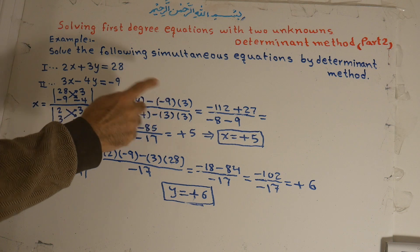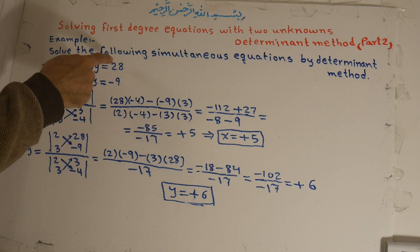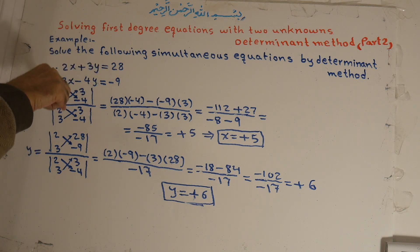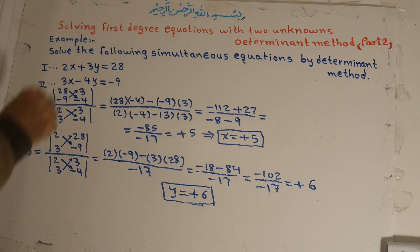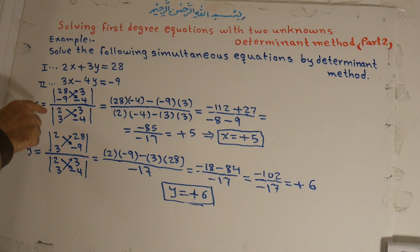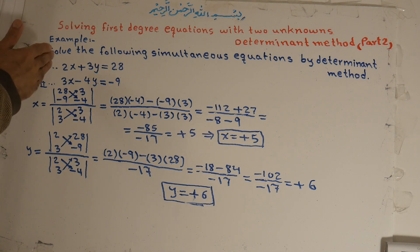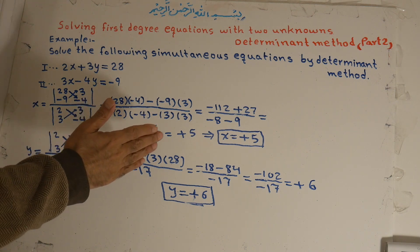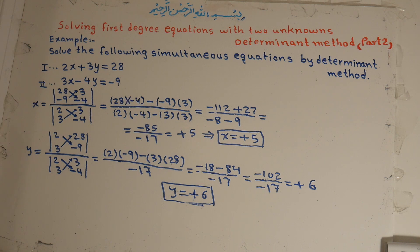To summarize: for x, instead of the coefficient of x, we bring in the constant numbers c. For y, the coefficient of y in the numerator stays the same, with coefficient of x here and coefficient of y here. The final result is x equals positive 5 and y equals positive 6.